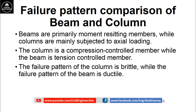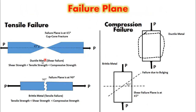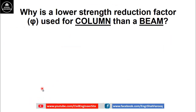The failure pattern of the column is brittle, while the failure pattern of the beam is ductile. Brittle failure is abrupt, while ductile failure gives a warning and involves plastic deformation. Brittle failure is more dangerous as compared to ductile failure. In ductile failure, cone formation occurs and the failure includes plastic deformation, while for brittle material no cone formation occurs and the failure is abrupt.